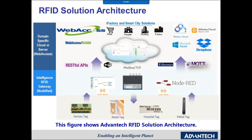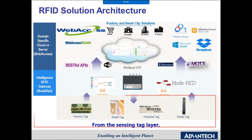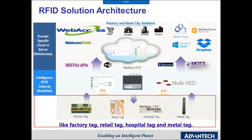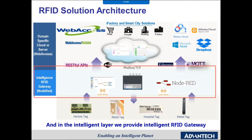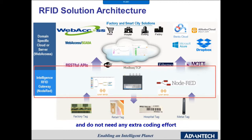This figure shows the Advantech RFID solution architecture. From the sensing tech layer, we provide different kinds of application field technologies like factory tech, retail tech, hospital tech, and metal tech. In the intelligent layer, we provide an intelligent RFID gateway to read, filter, and transfer each kind of tag data — no extra coding effort is needed because we provide the Node-RED function.